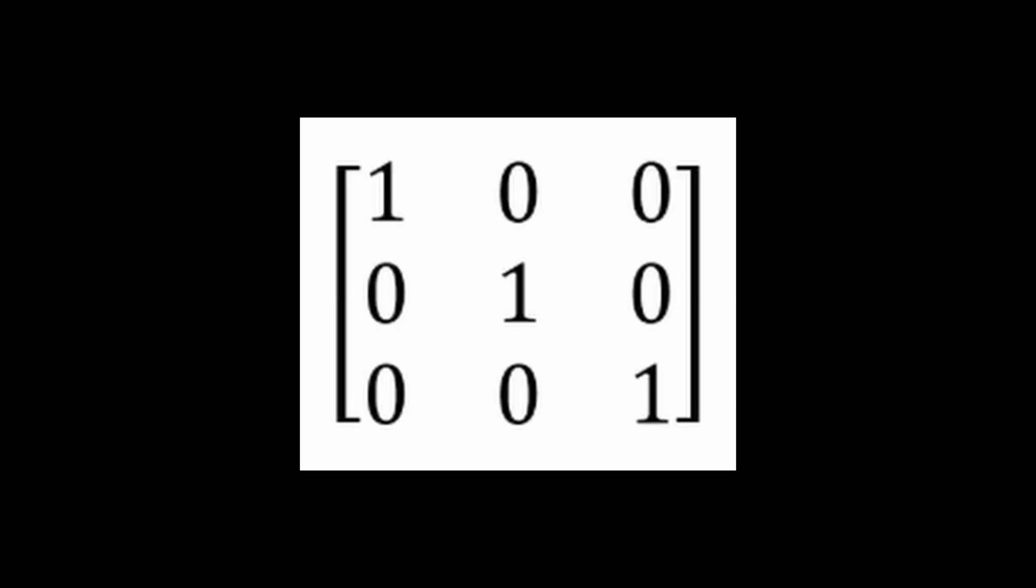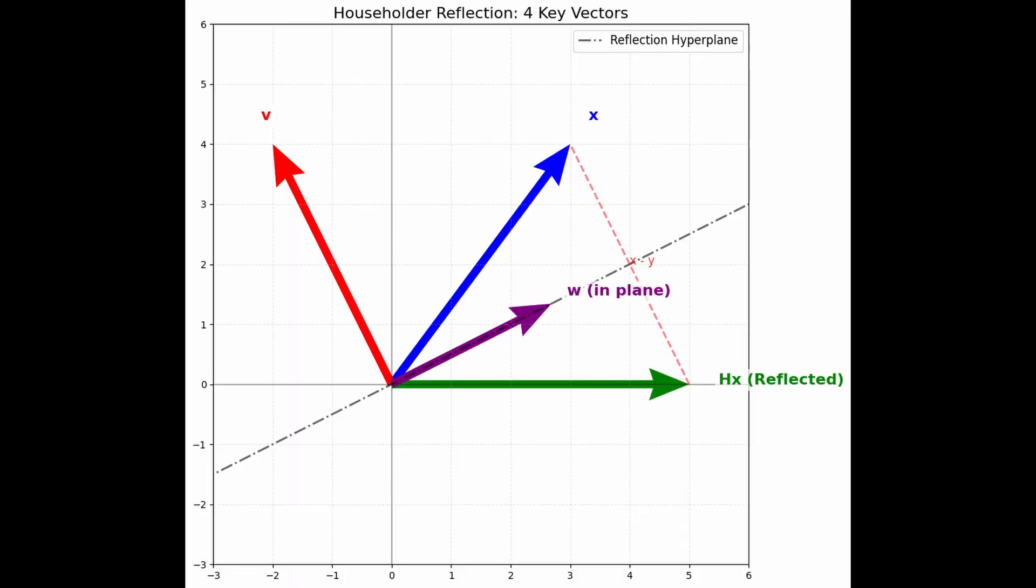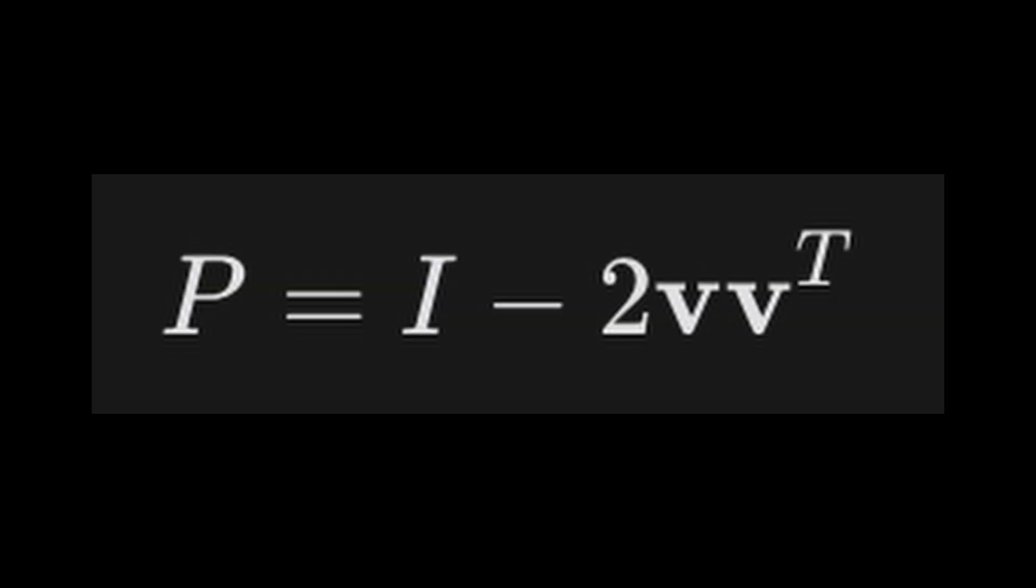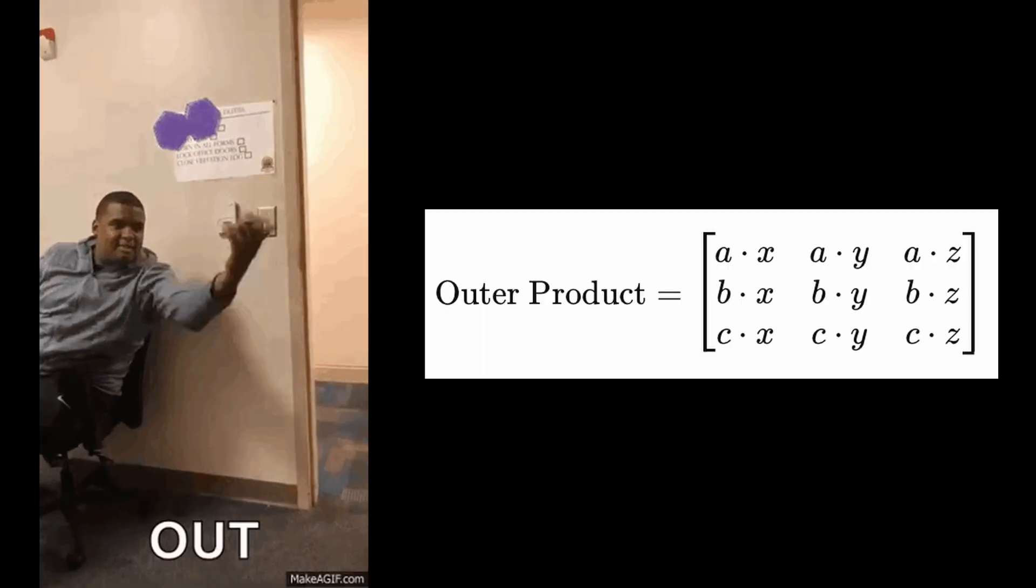To calculate that new vector, we may use this formula. I is identity matrix, v is vector perpendicular to the reflection plane. If v is a unit vector, that means length one, then the formula simplifies to this, and v times v transposed is outer product to create a matrix.